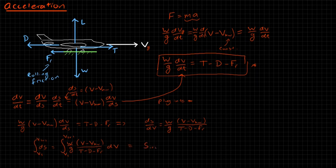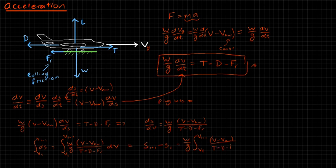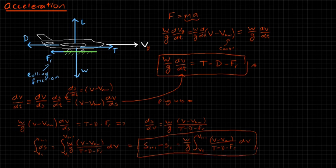We assume that weight does not change during takeoff — meaning fuel burn during takeoff is negligible, which is a reasonable assumption in many cases. So W over g comes outside the integral, and we integrate from V sub i to V sub i+1 of (V minus V sub hw) divided by (T minus D minus F sub r) dV.